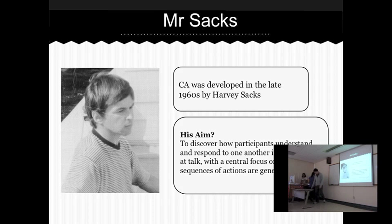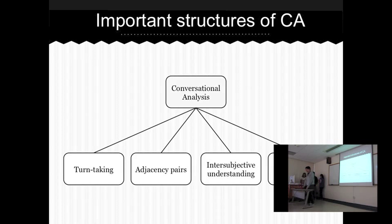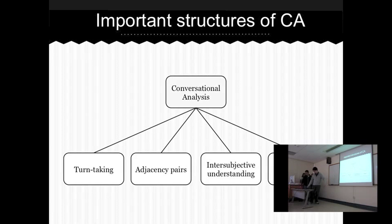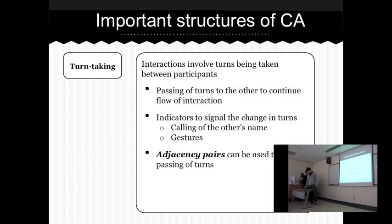Thanks, Kreeti. From our research, we have found that there are four structures that are more applicable for us in CA design. These are turn-taking, adjacency pairs, intersubjective understanding, and repair. Turn-taking, as the name suggests, is concerned with turns being taken between participants and how people pass around the turns.